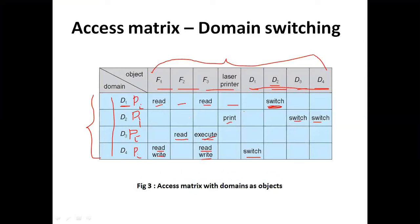Once a process switches to domain d1, it can read f1 and read f3, and from d1 it can switch to domain d2. Processes can switch within different domains — once in d2, if it has to print something, it can access the printer, or it can switch back to d4 and so on. This domain switching is represented in the matrix where domains are also represented as objects.